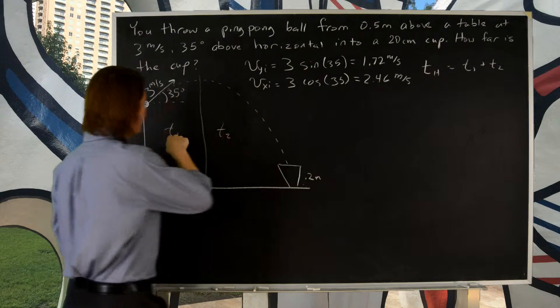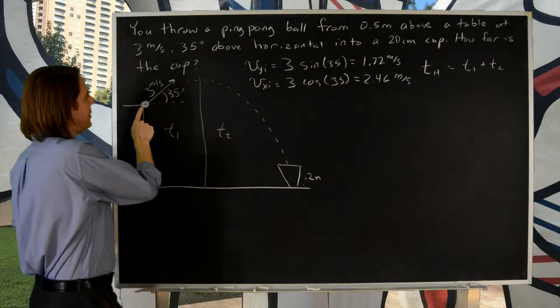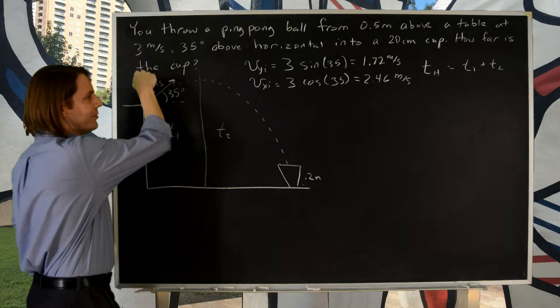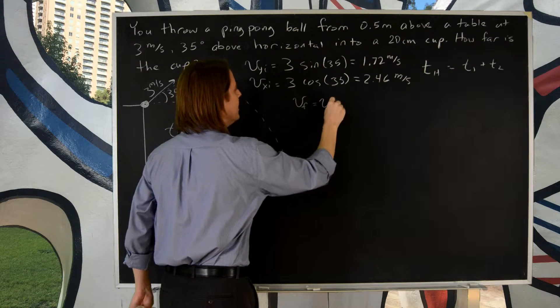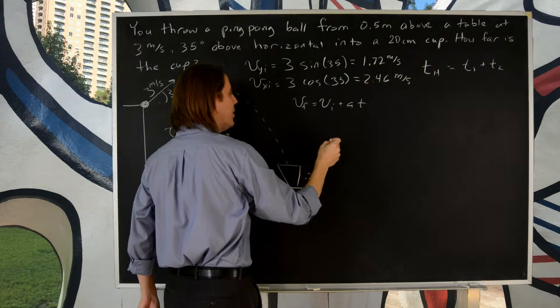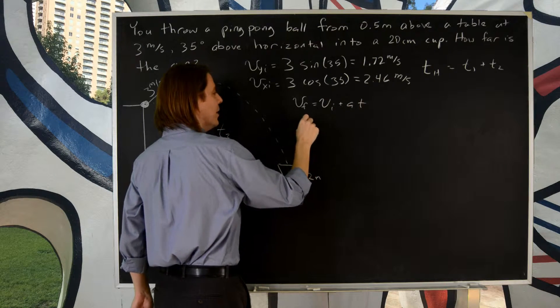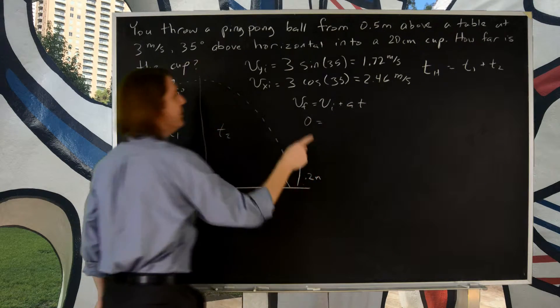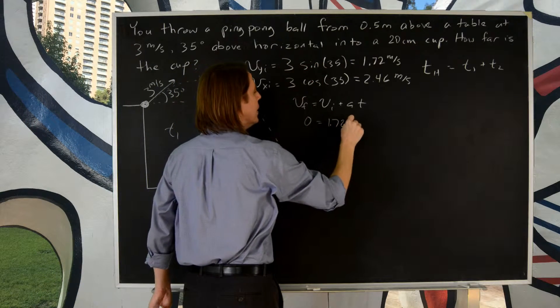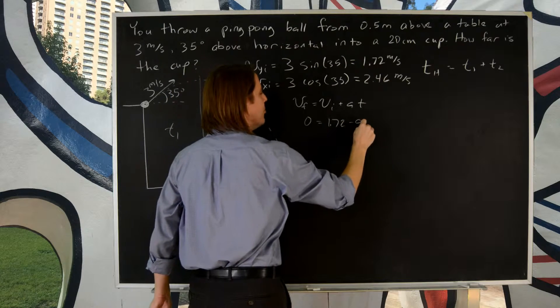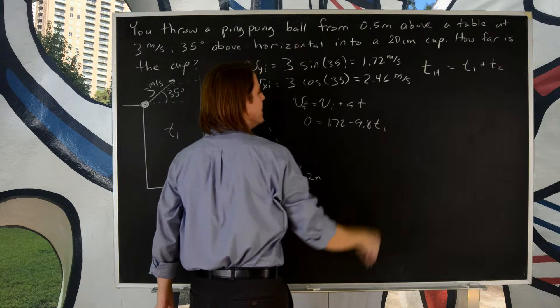So T1, how are we going to get T1? Well, it's the case we have an initial y velocity up and we have gravity pulling us down. And we remember that v final is v initial plus acceleration times time. And in this case, v final is zero. The initial was 1.72. Acceleration is minus 9.8 for gravity. And there's the T1 that we're looking for.